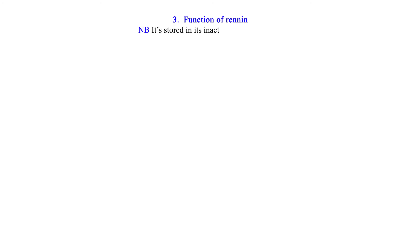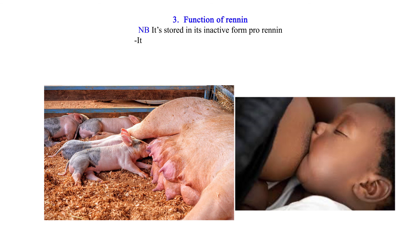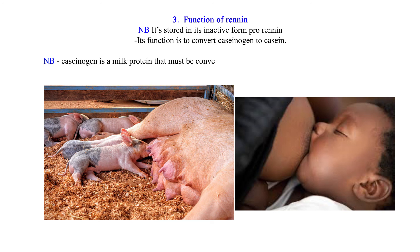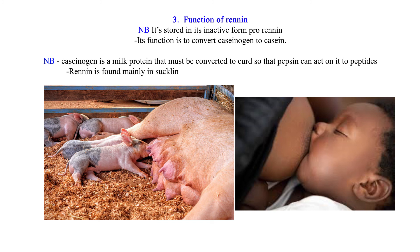3. Function of renin. NB: It is stored in its inactive form pro-renin. Its function is to convert caseinogen to casein. NB: Caseinogen is a milk protein that must be converted to curd so that pepsin can act on it to produce peptides. Renin is found mainly in suckling mammals because their diet mainly consists of milk.